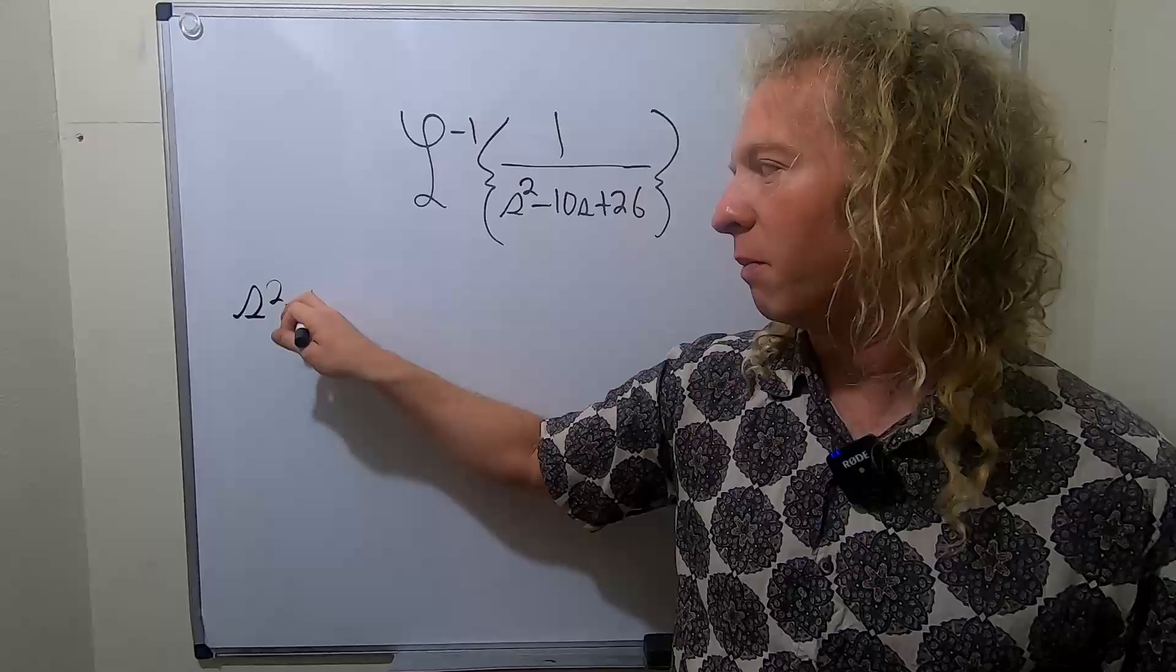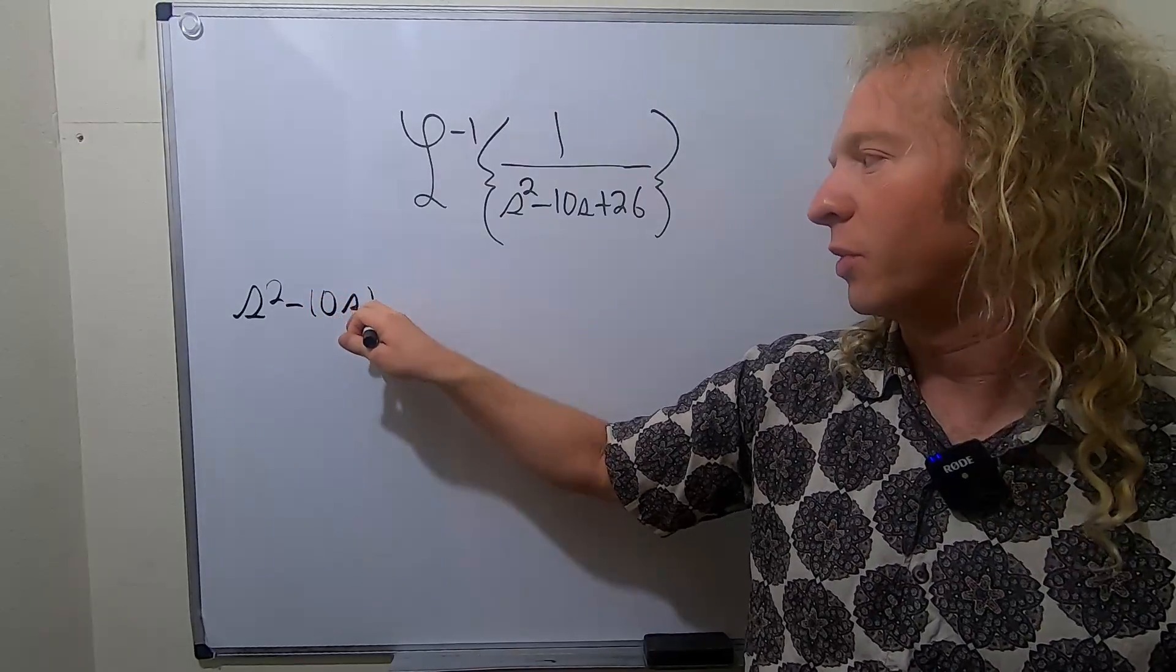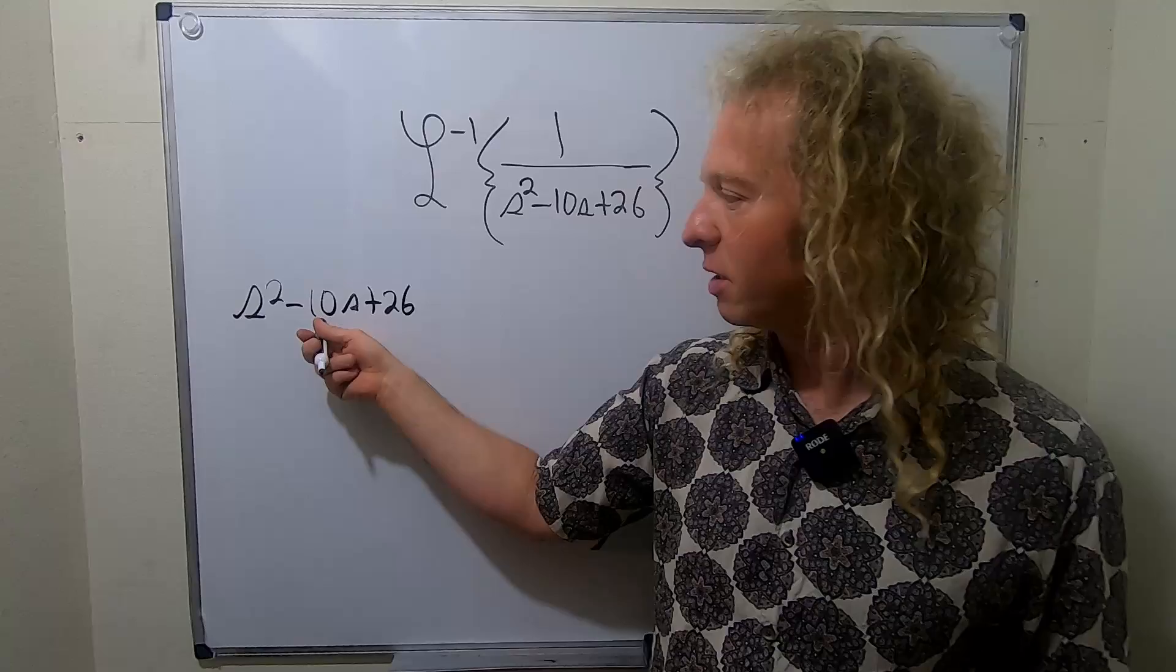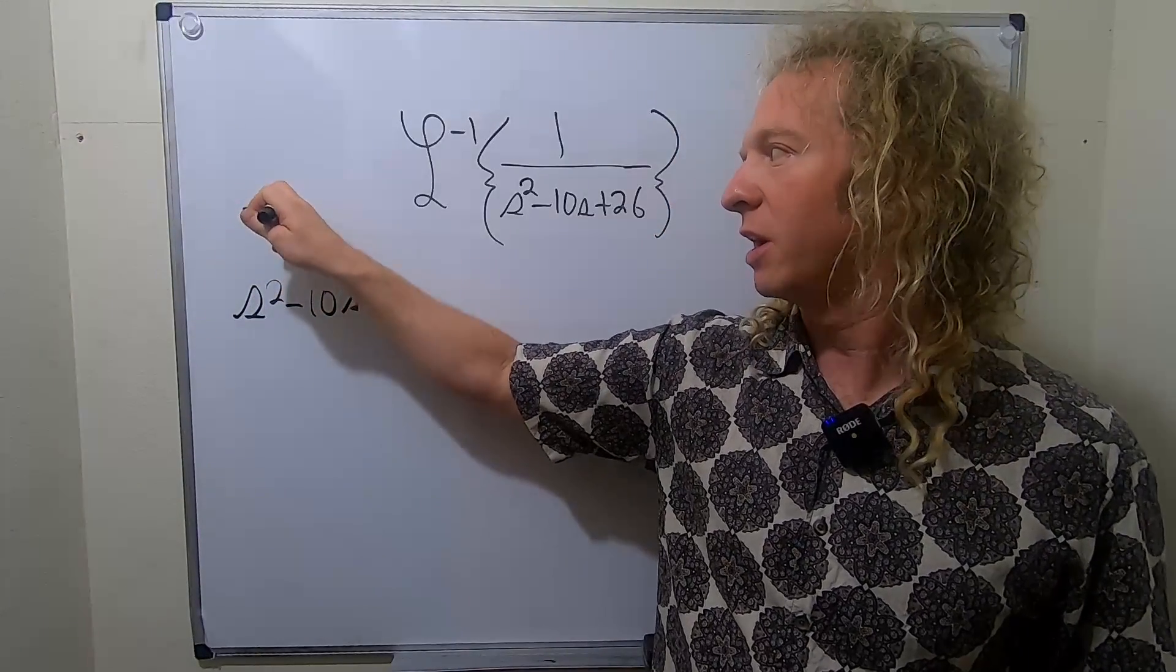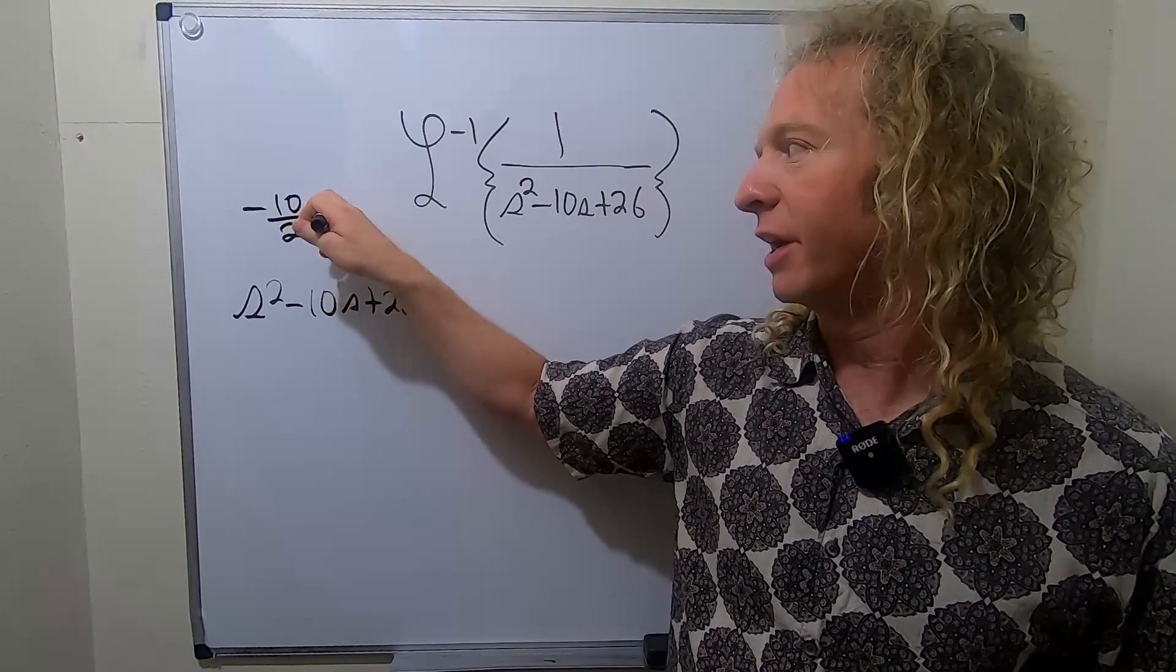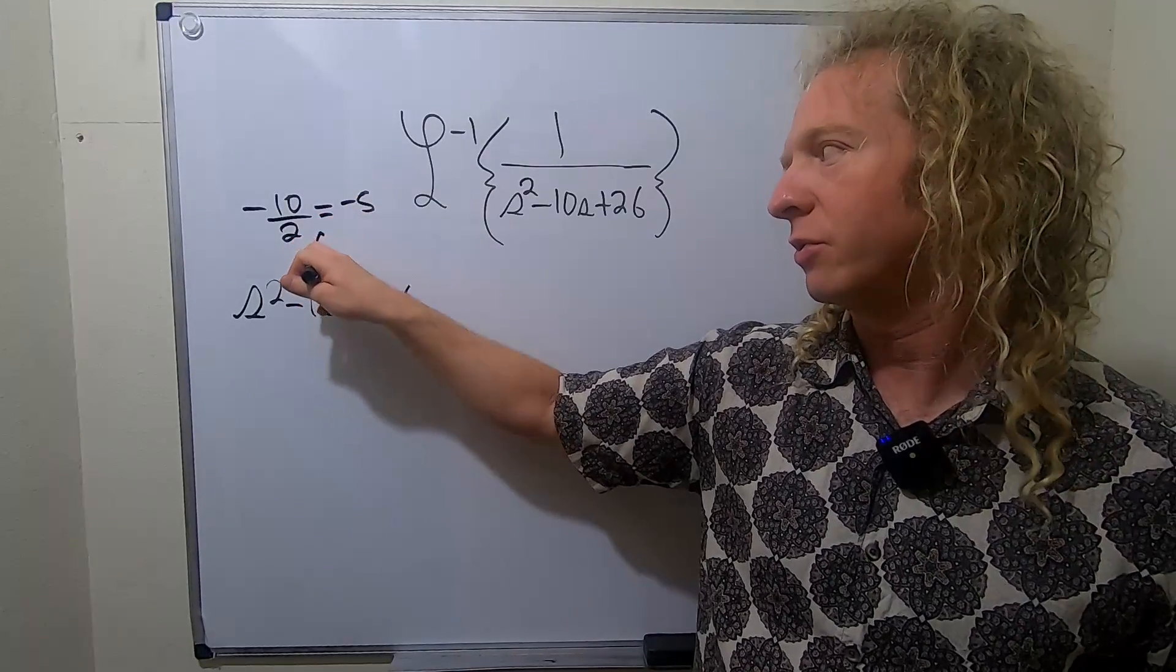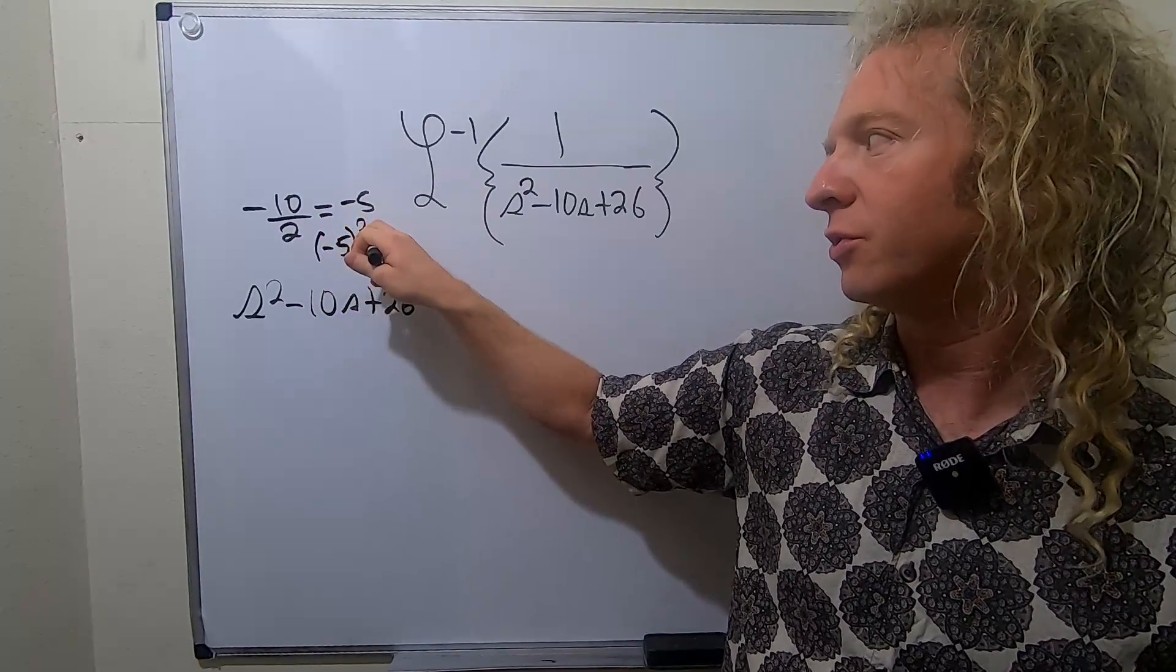So we have s squared minus 10s plus 26. So recall when you're completing the square, you take this number, divide it by 2, and you square it. So we have negative 10 over 2. That's negative 5. And if you square negative 5, you get 25.